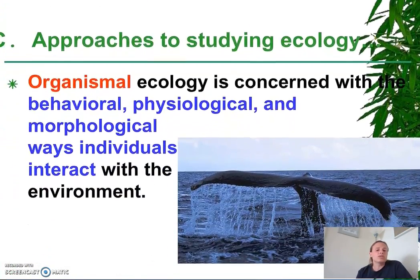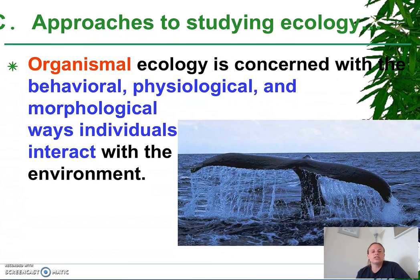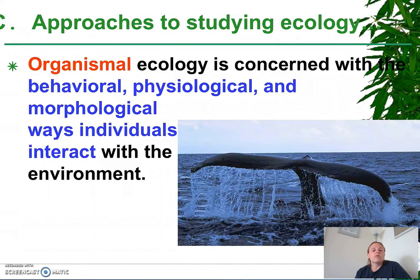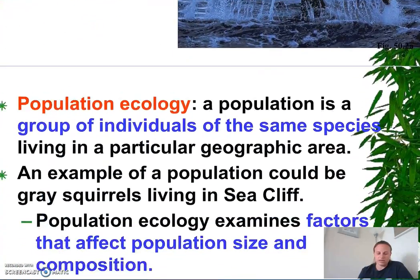There are different approaches taken to studying ecology. Organismal ecology looks at the interaction of individuals. It's concerned with the behavioral, physiological, and morphological ways that individual biotic organisms interact with the environment.